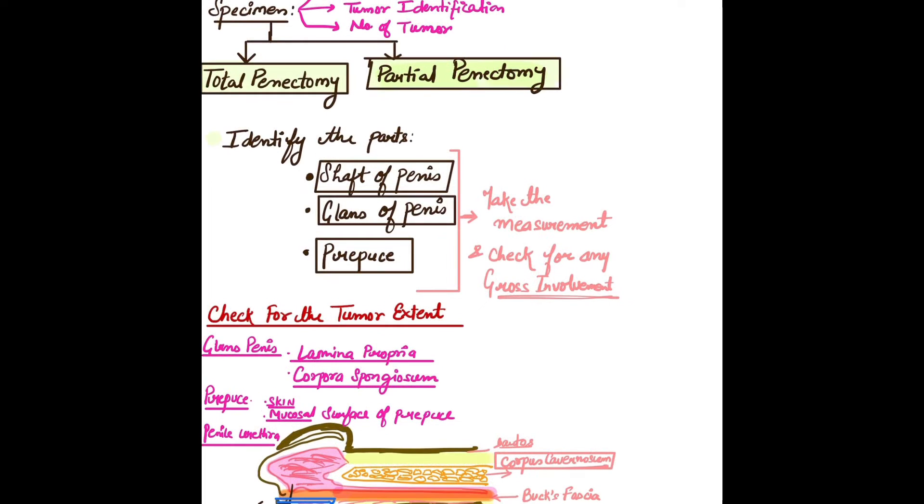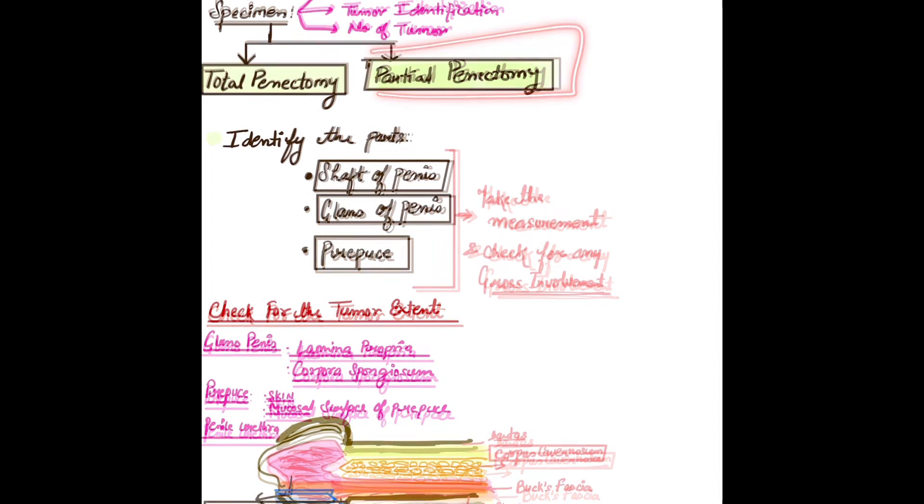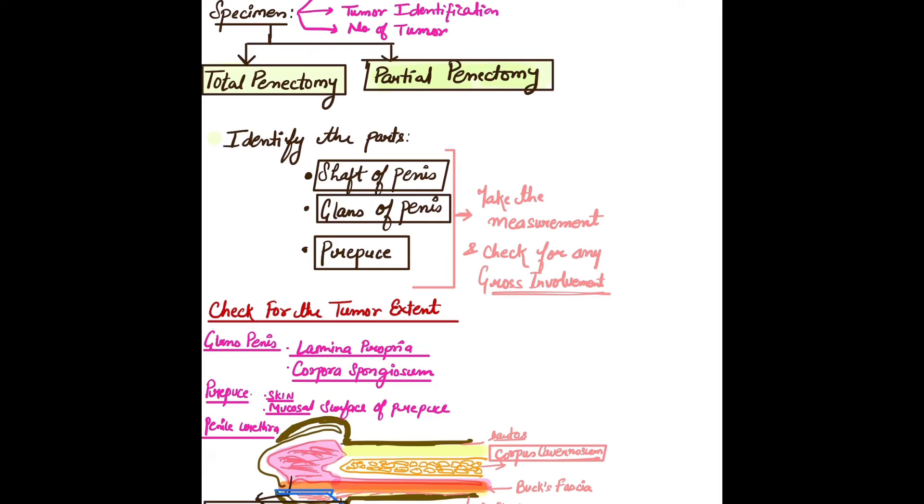Specimens are of two types. In total penectomy, the whole penis will be there. In partial penectomy, as our case is, we'll have to identify and take measurements of the shaft, glans, and prepuce.